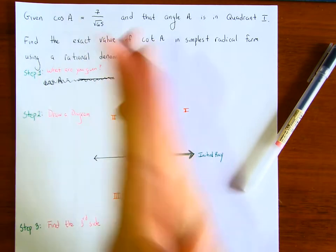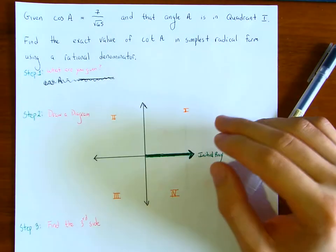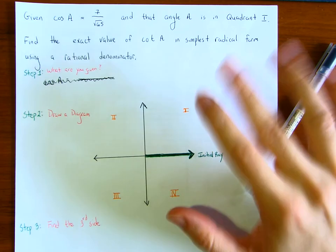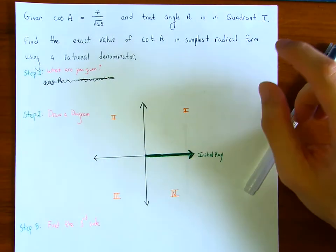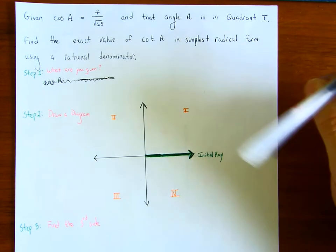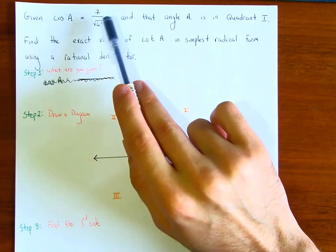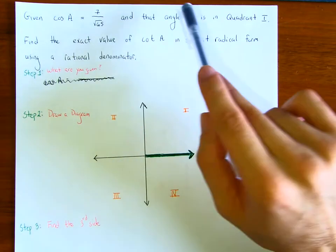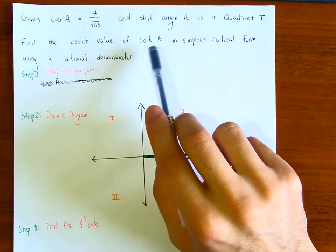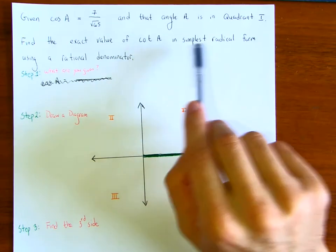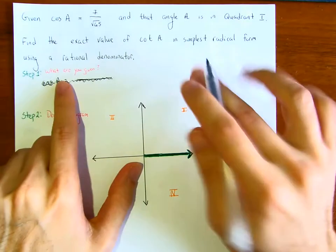All right, welcome everybody, let's do this. First, copy the question down and let's read it together. I don't want you to be too thrown off when we first read the problem — I think with a few practice attempts it'll feel much nicer. It's saying: given cosine of a is equal to 7 over square root of 65, and that angle a is in the first quadrant, find the exact value of cotangent of angle a in simplest radical form using a rational denominator.